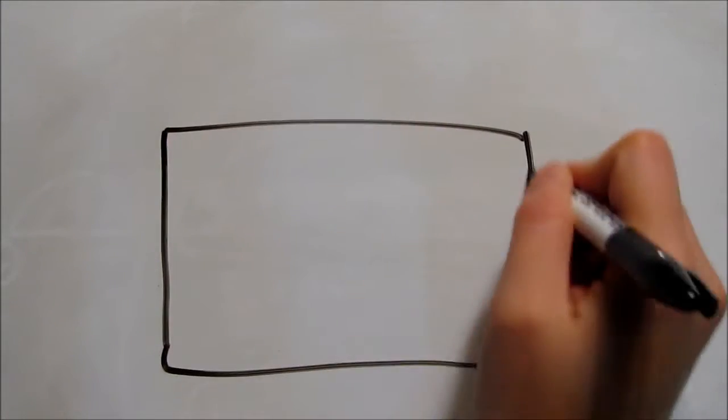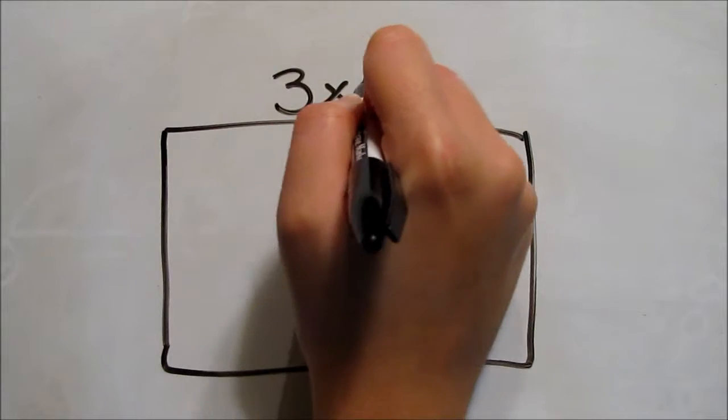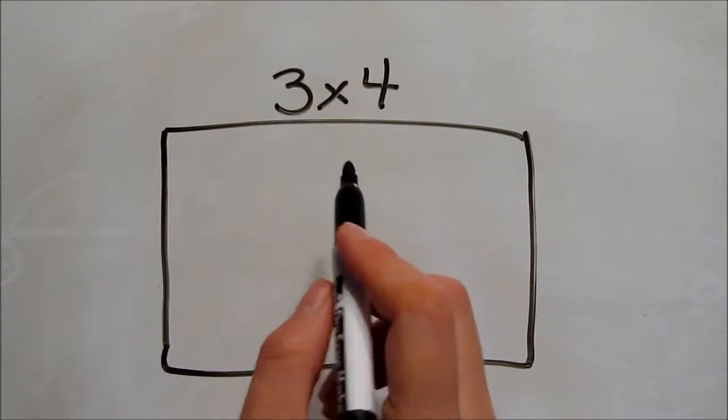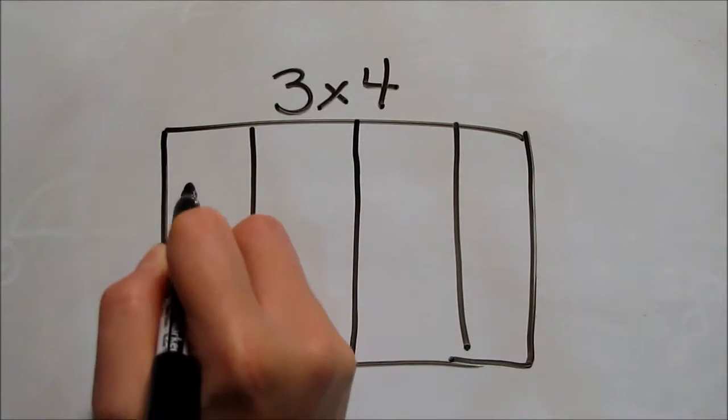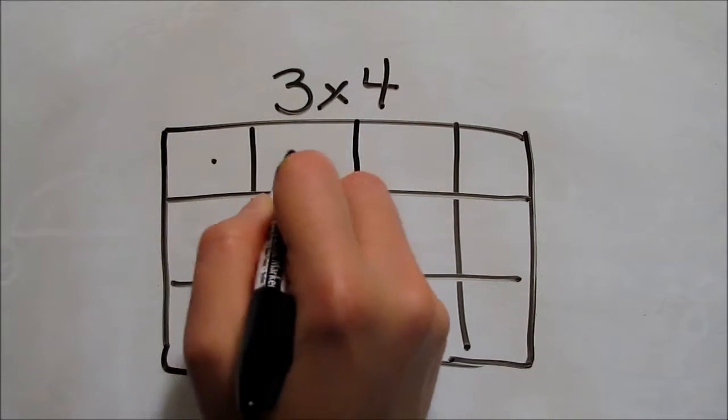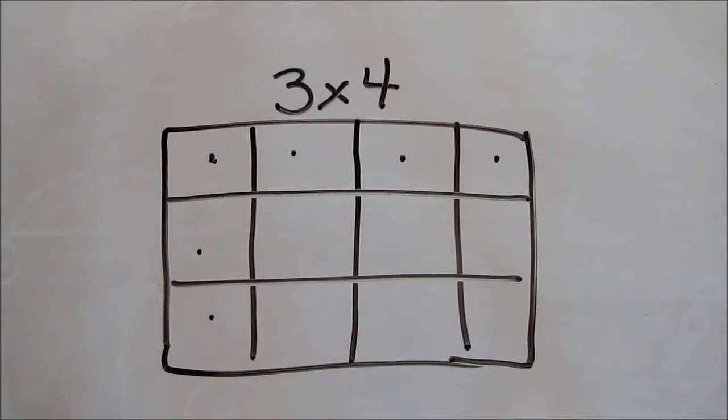An array is a rectangle that's broken down into smaller squares. This array shows 3 times 4. One side of the rectangle is 4 squares long, the other side is 3 squares long. We have 3 rows of 4 squares each, or a total of 12 squares.